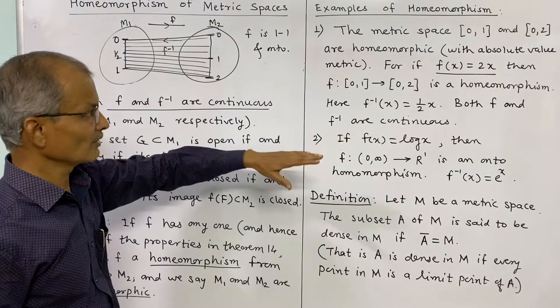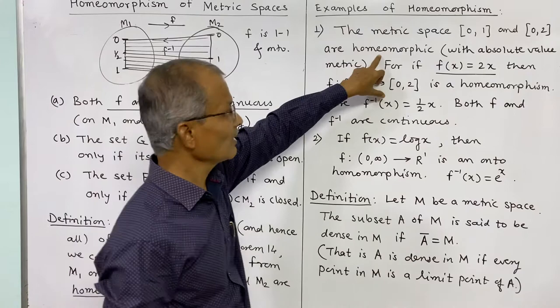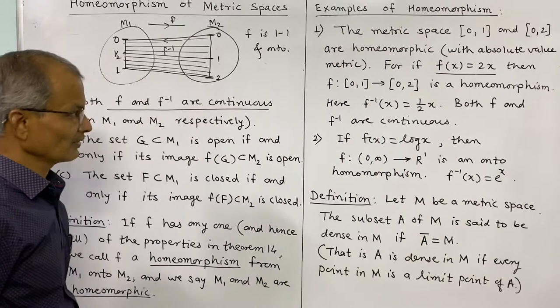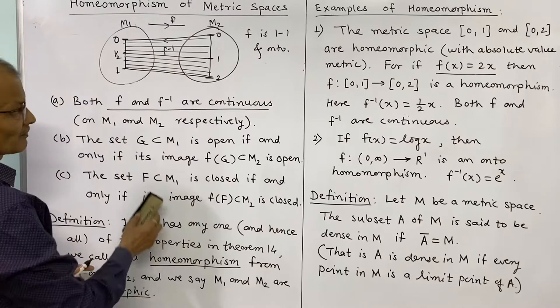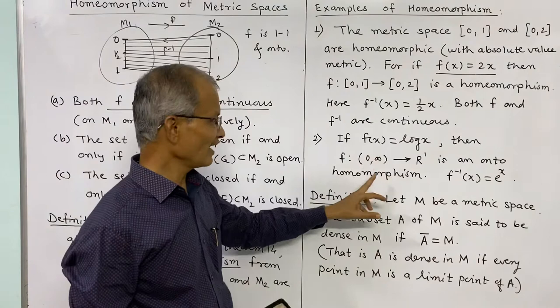Therefore this is a homeomorphism — not homomorphism, but homeomorphism — from the closed interval [0,1] to the closed interval [0,2]. That is our first example. The second example uses f(x) = log x.